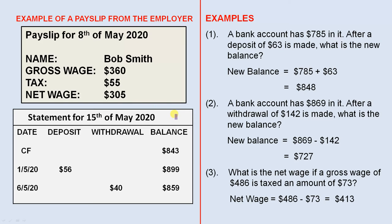Now here's a statement — a very simple example of a statement from a financial institution. CF means carried forward — that is the amount from last month. So the statement for this month starts off with $843 carried forward from last month. On the 1st of May 2020, a deposit of $56 was made, which means the new balance is $899 — that is $843 plus $56.